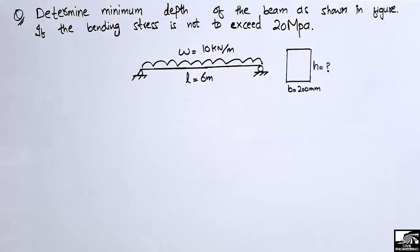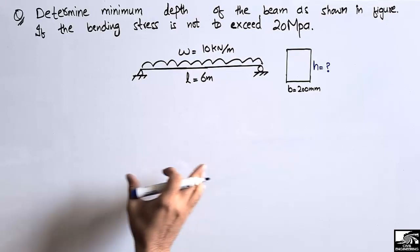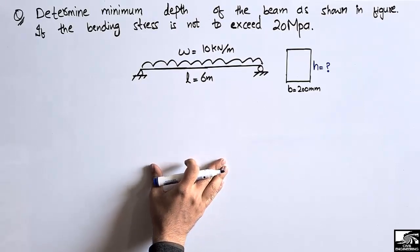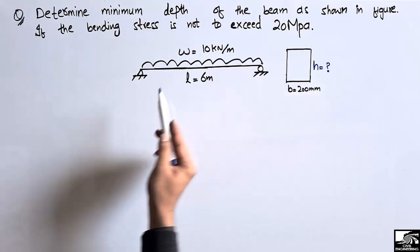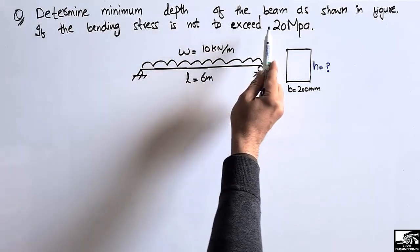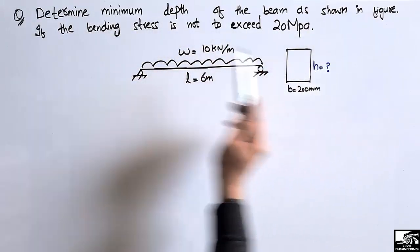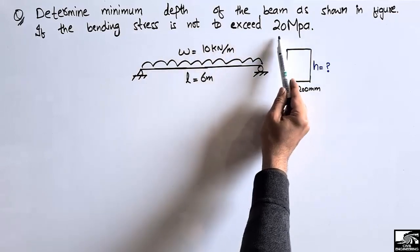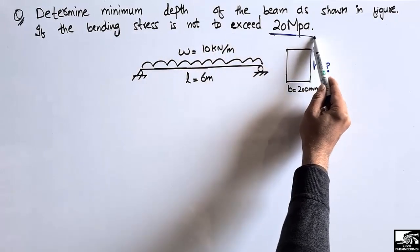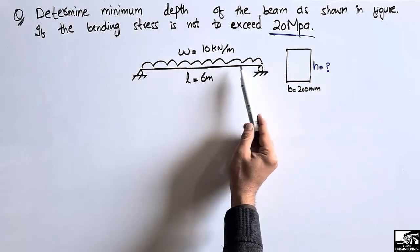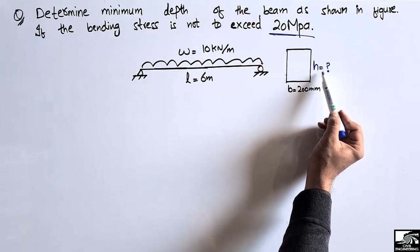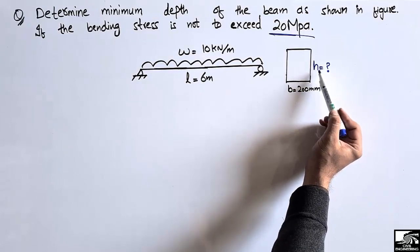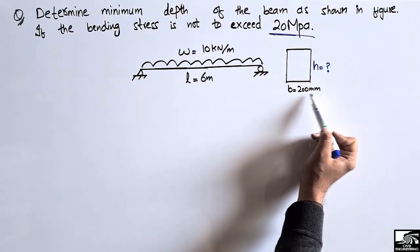Hello guys, welcome back to a civil engineering YouTube channel. Please subscribe for daily civil engineering videos. Today our lecture is about bending stress, and we have to find out the unknown parameter which is the depth of the beam. The problem states: determine the minimum depth of the beam as shown in the figure, if the bending stress is not to exceed 20 megapascals. The width of the beam is given as 200 millimeters.